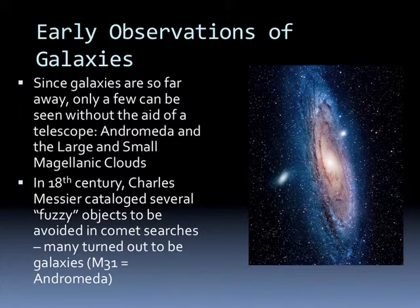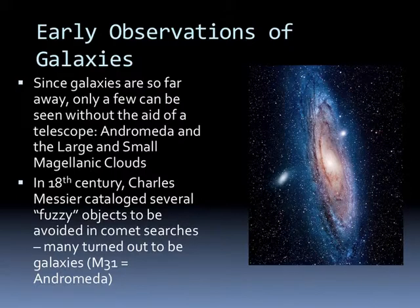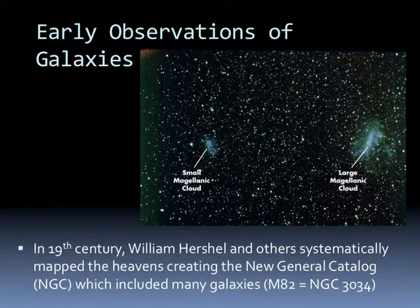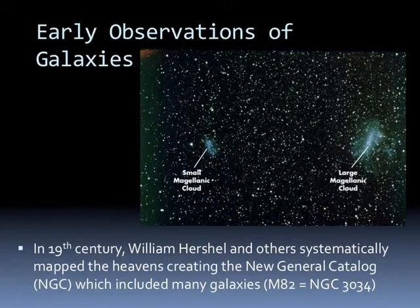Since galaxies are so far away, only a few can be seen without the aid of a telescope — Andromeda and the Large and Small Magellanic Clouds. In the 18th century, Charles Messier catalogued several fuzzy objects to be avoided in comet searches; many turned out to be galaxies. For example, M31, the Andromeda galaxy, is one example. Here we see two small galaxies that are actually in orbit around the larger Andromeda galaxy. In the 19th century, William Herschel and others systematically mapped the heavens, creating the New General Catalog, which included many galaxies. The Large and Small Magellanic Clouds are satellite galaxies to our own galaxy.